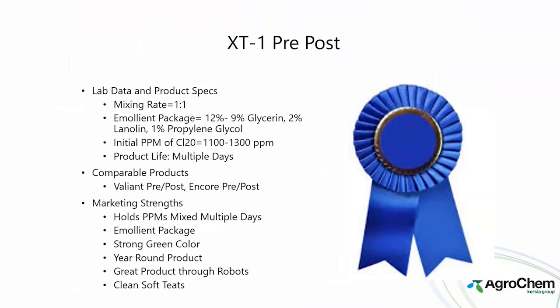Marketing strengths for the XT line: it holds ppm for multiple days — we don't specify an exact number because heat and temperature conditions vary. Mixing in winter versus a 110-degree utility room can cause strength changes. Emollient packages are strong, colors are vibrant, and it is a year-round product with great success on robotic milking farms.